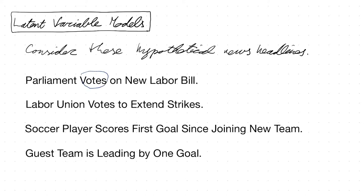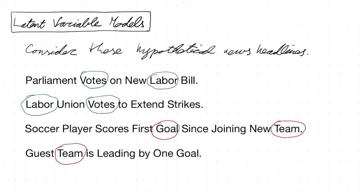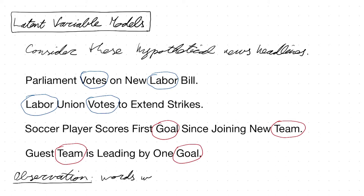When you think about these newspaper headlines in the context of correlations, you'll immediately notice that the words seem to be correlated. For example, the word 'votes' appears in two headlines but always in conjunction with the word 'labor' — not necessarily in the same order, but these two words tend to cluster together. Similarly, the word 'goal' tends to appear together with the word 'team'. So words within a headline appear to be correlated.